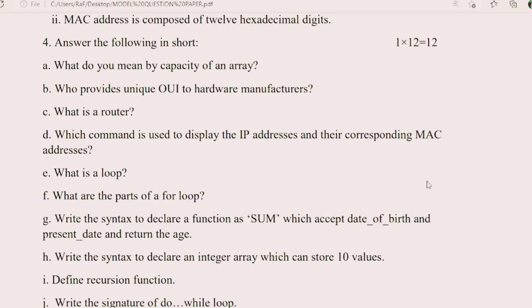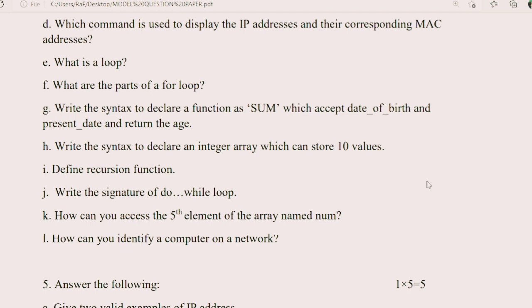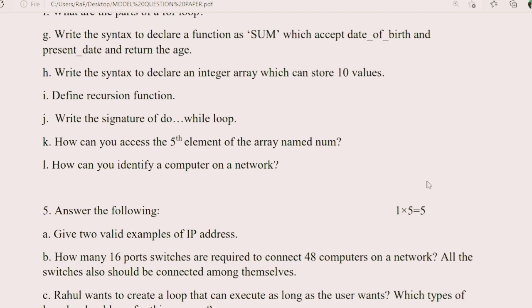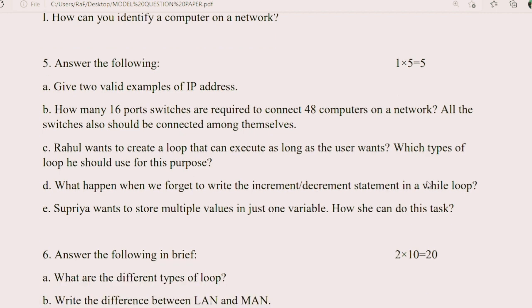After that, again I have added 5 mark questions. These are totally application based, means not learning one. If you have understood the chapters, then only you can answer the questions. So here, first, give two valid examples of IP address. Then number B, it's about connectors and ports. Means how many computers you can add to a hub which have 16 ports. That some calculation is required. If you know how to calculate, then you can easily answer it.